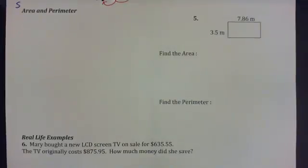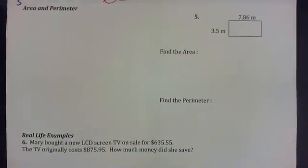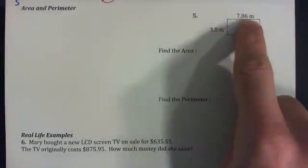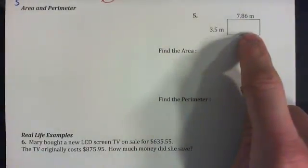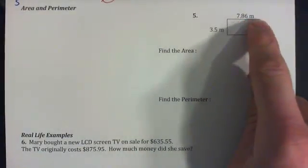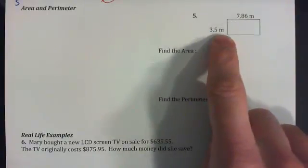Let's have a look at area and perimeter with decimals. So we're going to find the area and the perimeter for this box here. It's 7.86 meters by 3.5 meters.